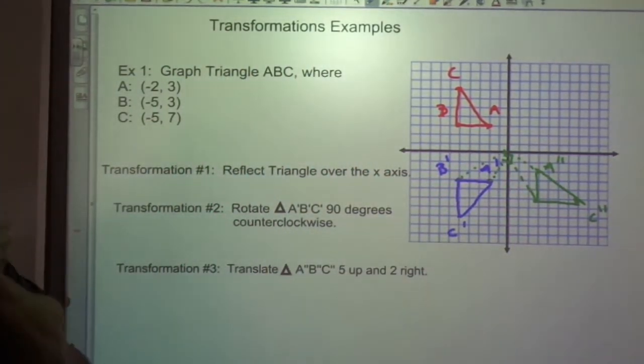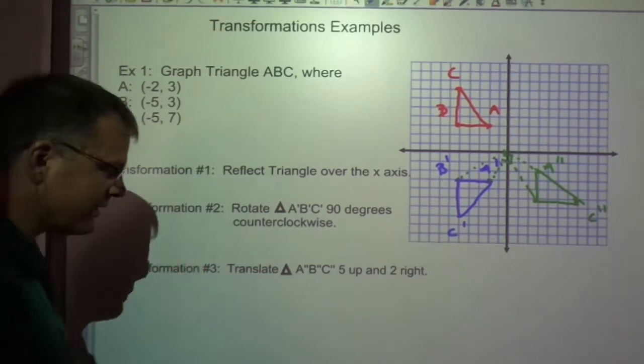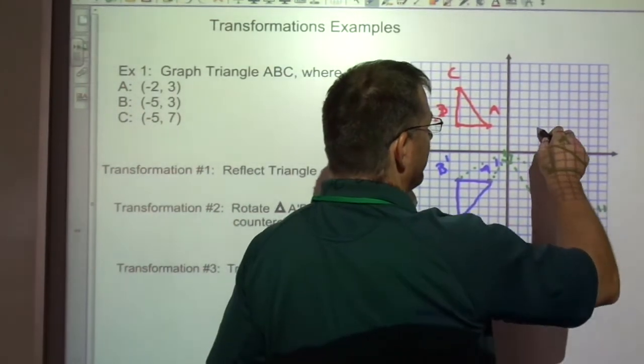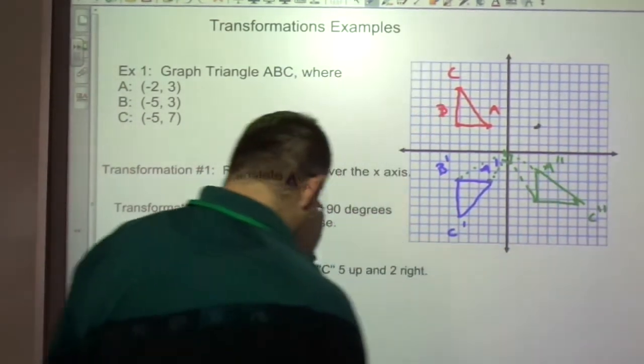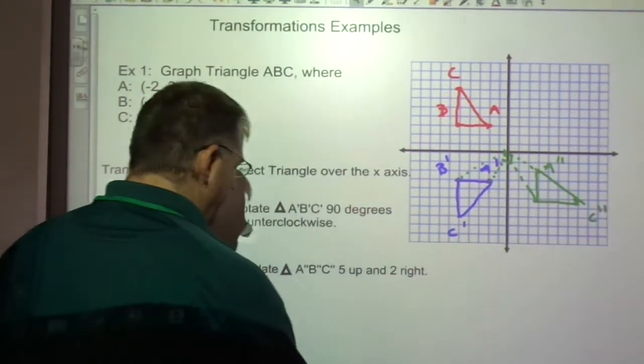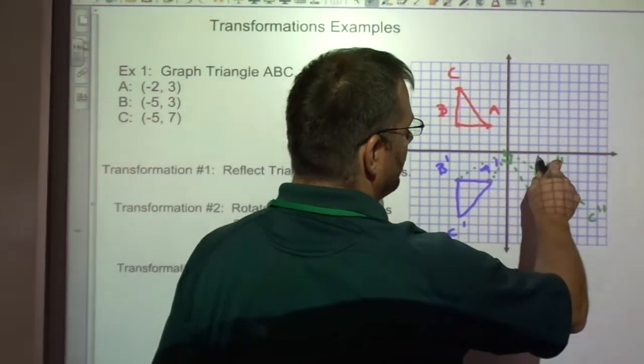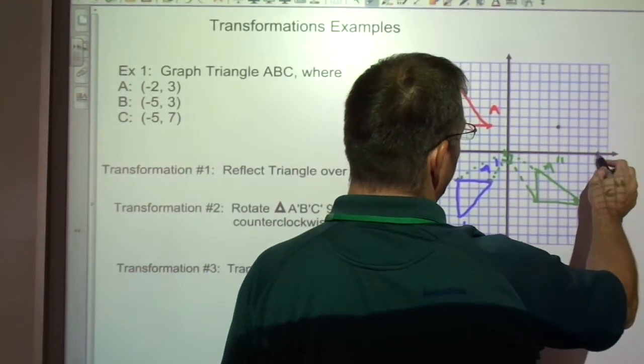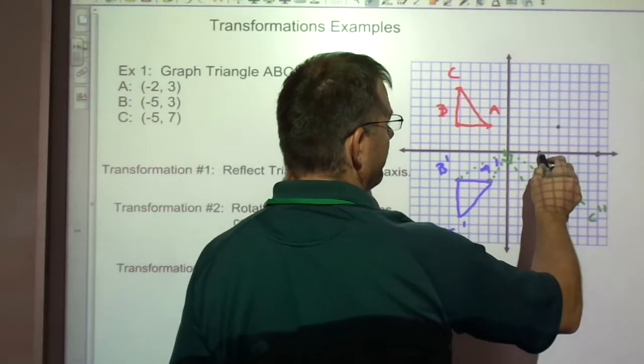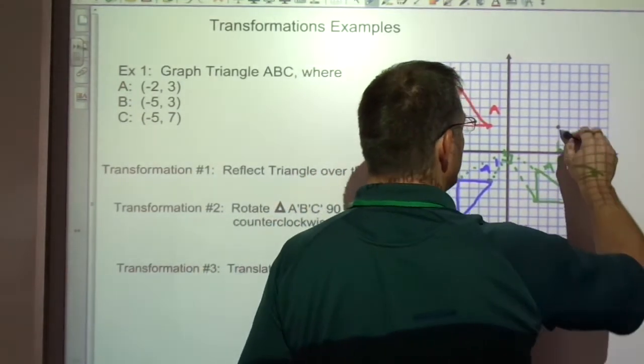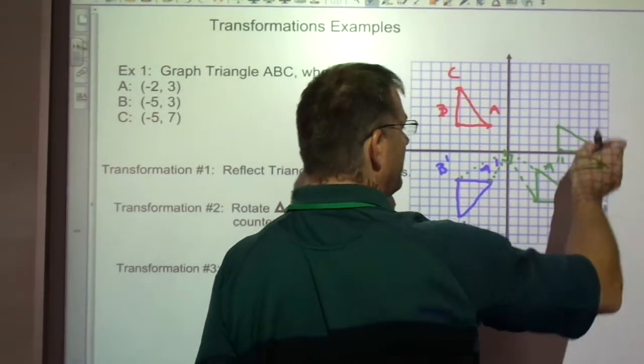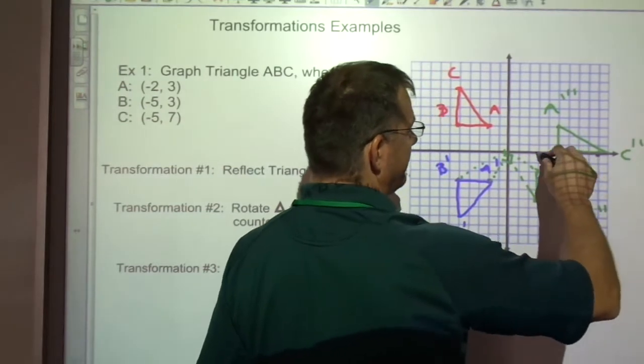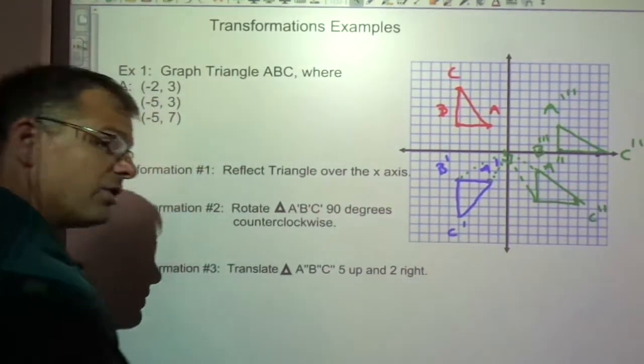Third one, translate it 5 up and 2 right. Translation is just a slide. So now we're just going to go up 5 every point, but not just 5 up, also 2 right. So up 5 and 2 over. This one, up 5 and 2 over. This is my new, this is triple prime. That's how the translations work.